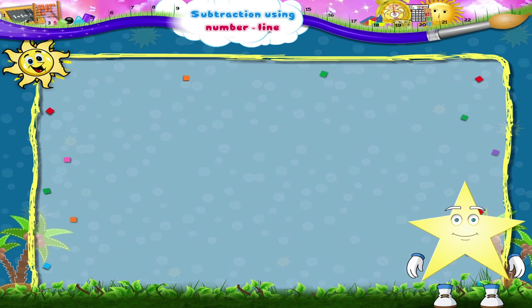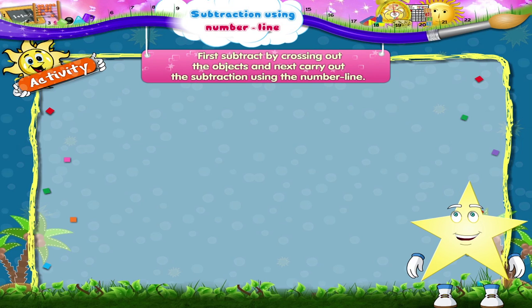Let us now do an activity together. We have to first subtract by crossing out the objects and next carry out the subtraction using the number line. Shall we begin?